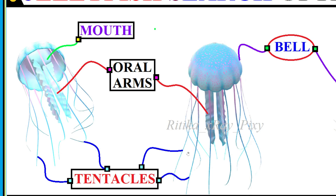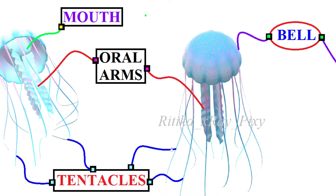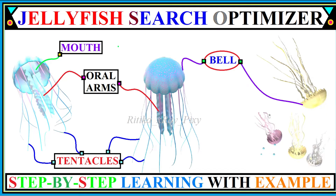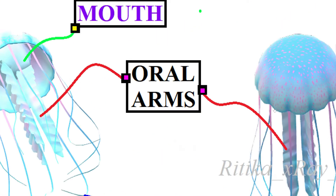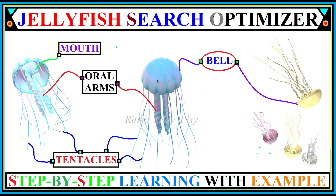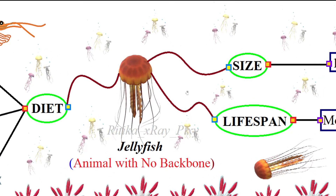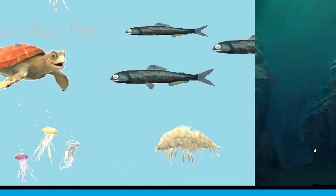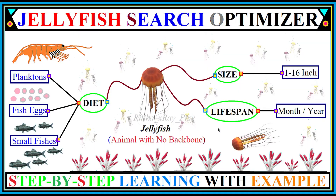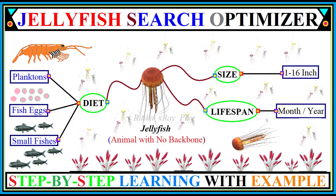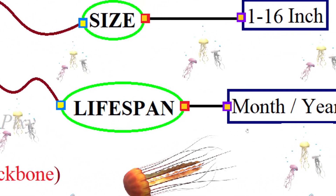Tentacles are flexible limbs used by jellyfish to catch their target, and they also use their tentacles to defend against predators. Jellyfish also use their tentacles to bring food into their mouth. You can see oral arms and the bell as part of the basic body structure. Jellyfish are found all over the world, from surface water to deep water. Most jellyfish species are fast-growing and mature within a few months, then die soon after breeding.